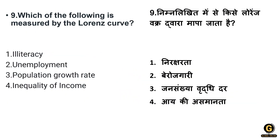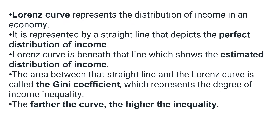Question nine: which of the following is measured by the Lorenz curve? Options are illiteracy, unemployment, population growth rate, and inequality of income. The correct answer is option four: inequality of income. The Lorenz curve represents the distribution of income in an economy. A straight line represents the perfect distribution of income, while the Lorenz curve lies beneath that line. The area between the straight line and the Lorenz curve is called the Gini coefficient, which represents the degree of income inequality. The further the curve, the higher the inequality.